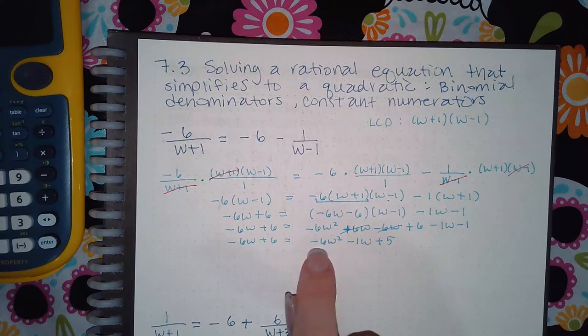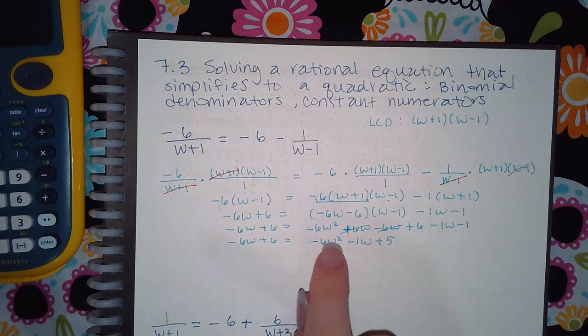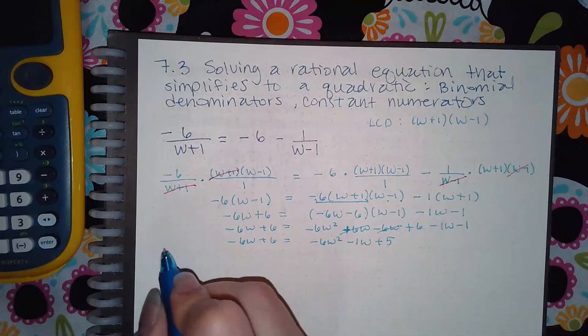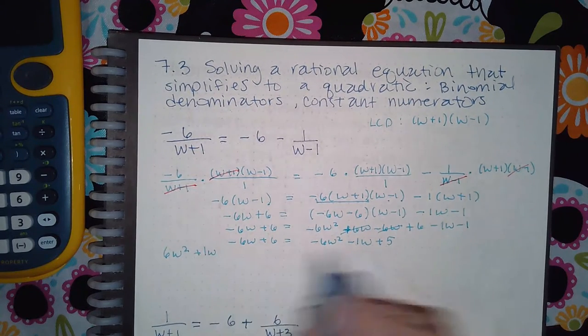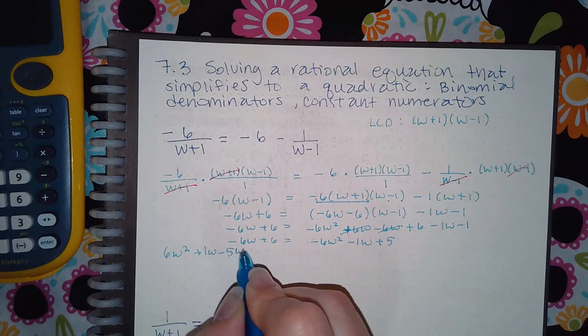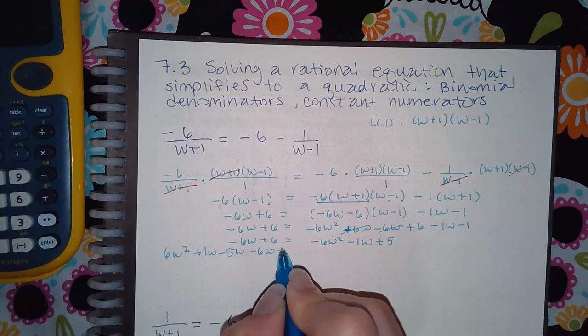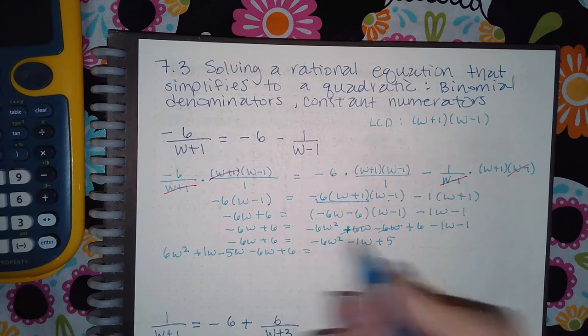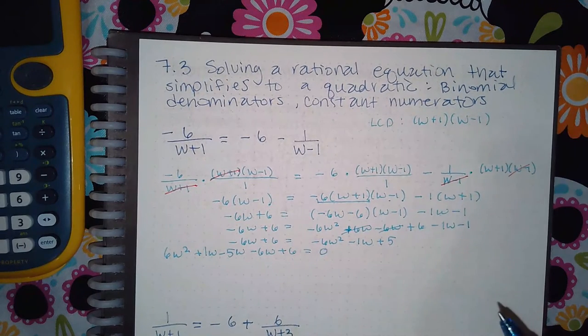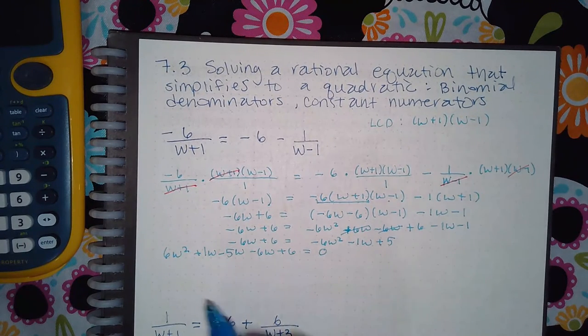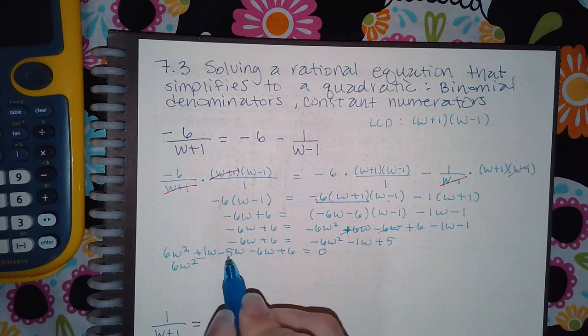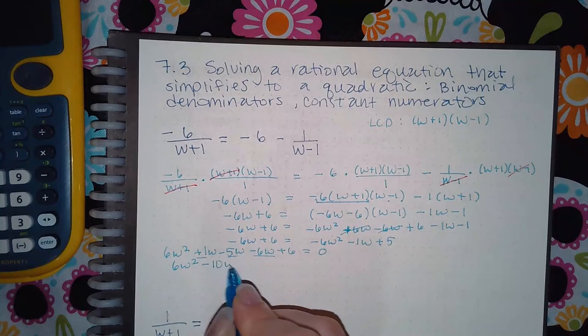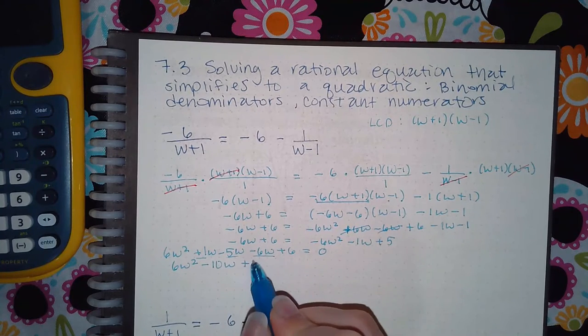So for this term, I want it to be positive, so I'm going to move it over to this side. And so then that means I have to move over everybody. So this one's going to become positive 1w and negative 5w. These two terms were already there. And so all three moved over there. I have nothing left over on this side. Now that means I have 6w squared and all of these terms to combine. So I get negative 10w and then plus 6.